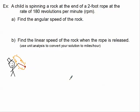So here's our final problem. I like this problem. A child is spinning a rock at the end of a 2-foot rope at the rate of 180 revolutions per minute, or RPMs. I drew a picture of it, and he's a fancy child. He's got his top hat on. So he's spinning this rock around on the end of this rope. Hopefully he's not going to hurt himself or somebody else, but I don't know. So he's spinning this around, and it's going around 180 times every minute. And he's going to let go at some point.